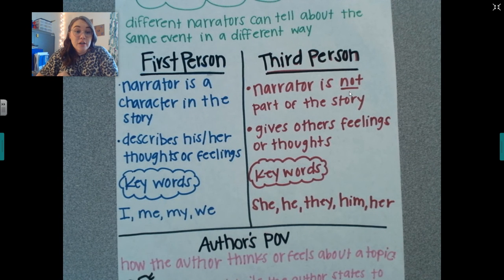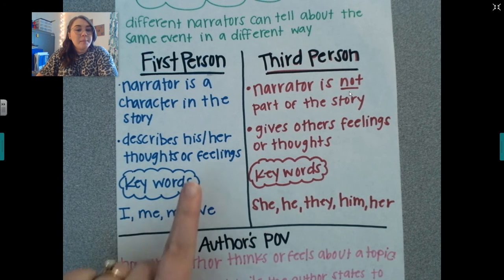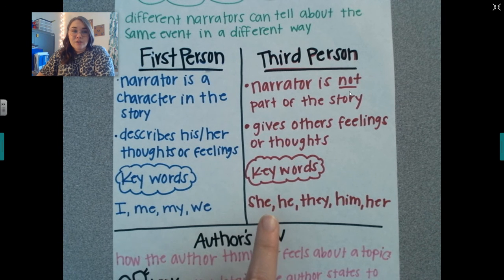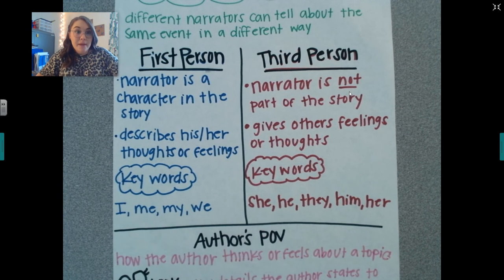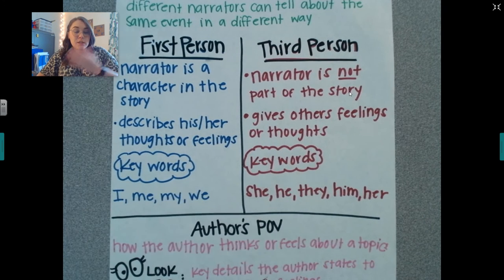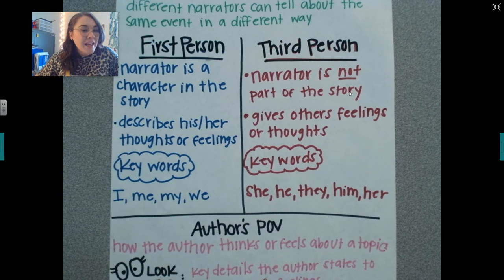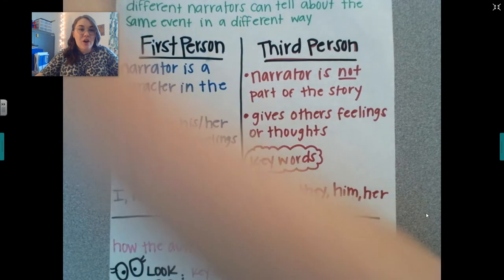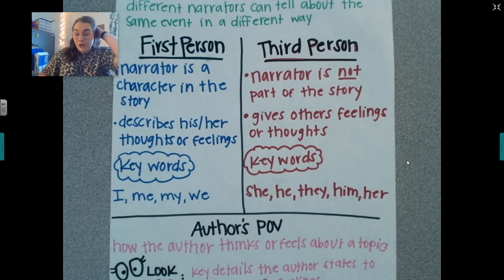Do you think Gregor is telling the story from his point of view, or do you think somebody on the outside of the story is telling you the story? I'll tell you one thing — Gregor's name was mentioned a lot. Normally when a book is in first person, the narrator's name isn't mentioned all that often. I also saw she, he, they, him, and her quite a bit. So I want you to tell me what you think the point of view is — first person or third person — on Flipgrid. Also tell me why you think that. And when you're done, just turn it in. All right guys, I love you all so much — have a great day.